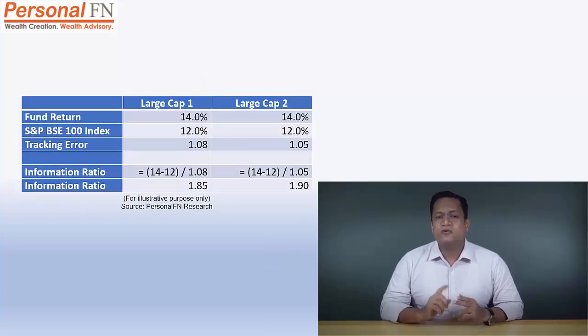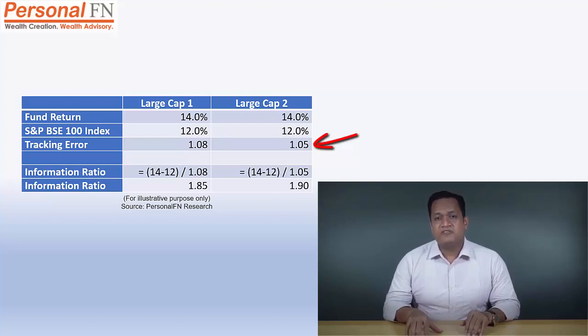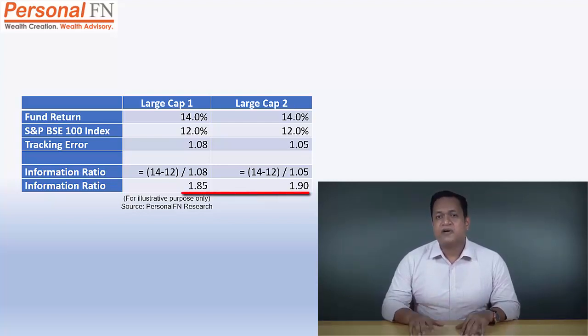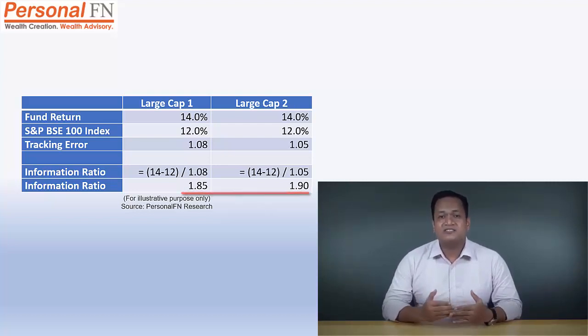Now consider an example where two funds have generated similar returns of 14% over one year compared to a return of 12% by the market index, but have a tracking error of 1.08 for fund 1 and 1.05 for fund 2. Applying the formula — portfolio return minus benchmark return divided by tracking error — gives an information ratio of 1.85 for fund 1 and 1.90 for fund 2, which means fund 2 is better than fund 1. A high information ratio indicates that the fund manager is more consistent in generating returns relative to the benchmark, so a fund with a higher information ratio could be preferred.